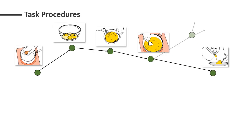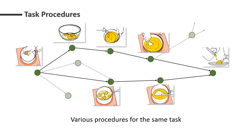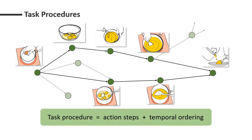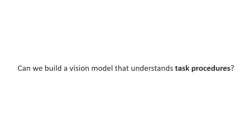Consider this example: making scrambled eggs. One can follow the steps in this figure to make it. There will be other ways to make scrambled eggs, as shown in the lower procedure. For all possible procedures, there are two main components: action steps and the temporal ordering of steps. In this project, we ask the question: can we build a vision model that understands task procedures?